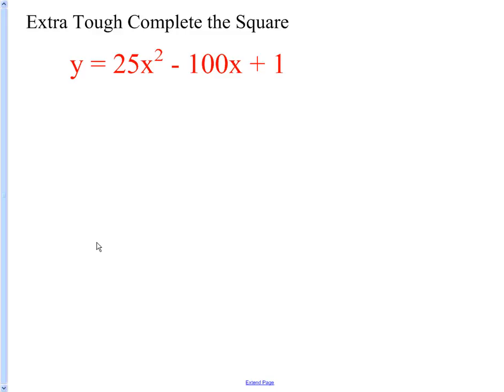Okay, here's an extra tough complete the square problem. Remember, first step is you put the plus box minus box thing there, but you don't actually do the half and square until after you factored something out. Do the factoring first.